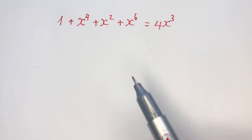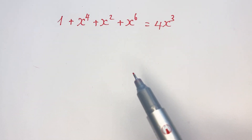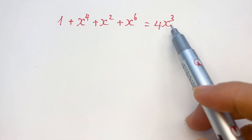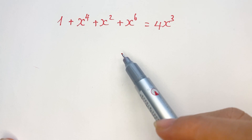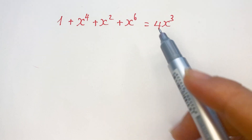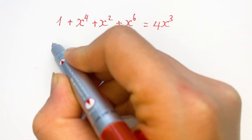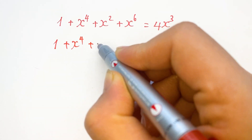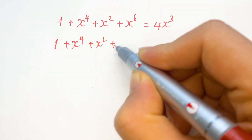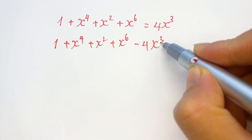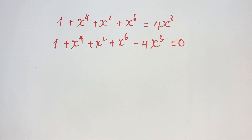Hello. How to find the value of x in this equation. Firstly, you need to move 4x to the left-hand side, so you need to change the sign of the variable. Next, you see: 1 plus x to the power 4, plus x squared, plus x to the power 6, minus 4x squared, equals 0.